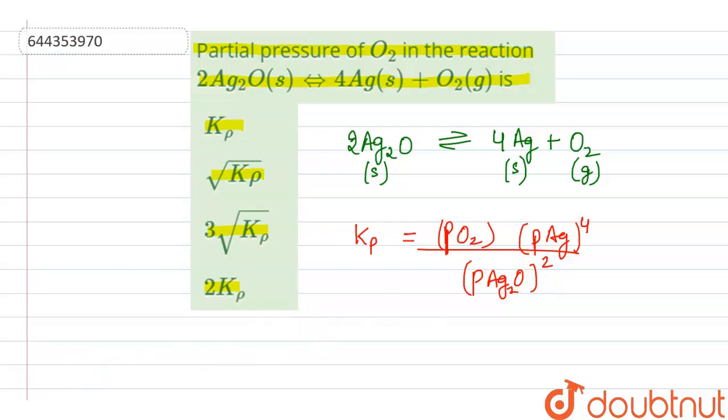Now in this reaction we have given that this silver oxide and silver, they both are in solid state, and oxygen is the only one which is in gaseous state.